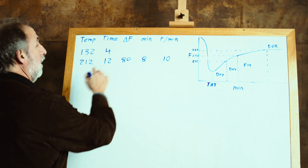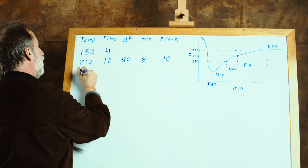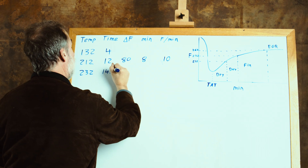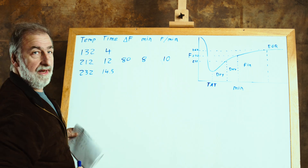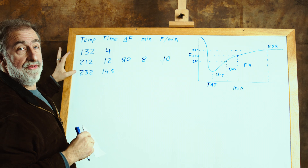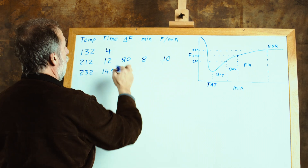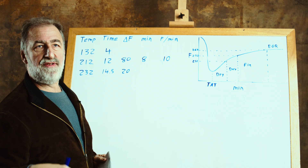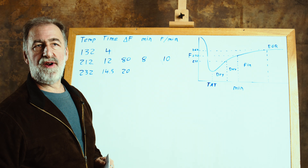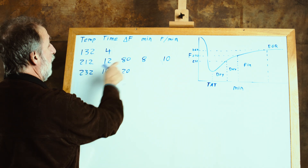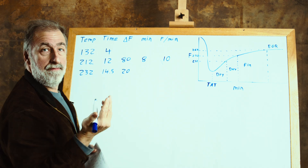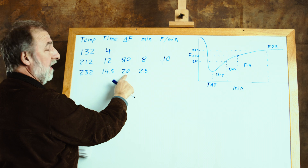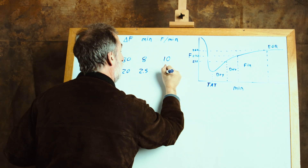The next stage goes to 232 degrees. In this example it took a total of 14 and a half minutes from the beginning of the roast. I chose 232 to make the math simple — the temperature difference in the development phase is always 20 degrees Fahrenheit by definition. In this particular case it's taking two and a half minutes: 14.5 minus 12. Same thing — we calculate speed. 20 divided by two and a half equals 8 degrees Fahrenheit per minute.